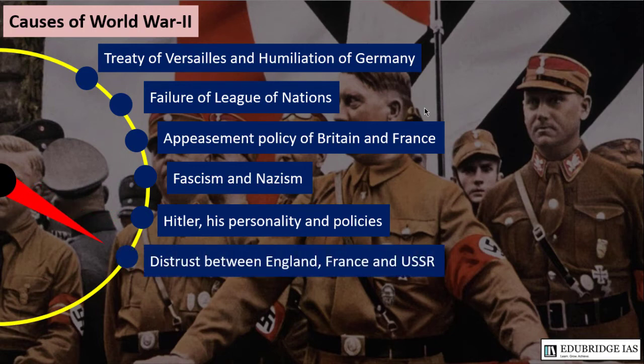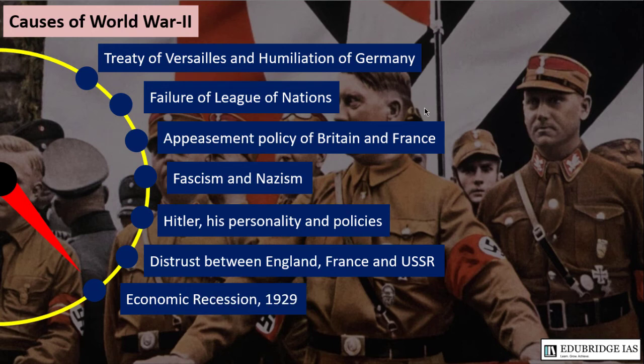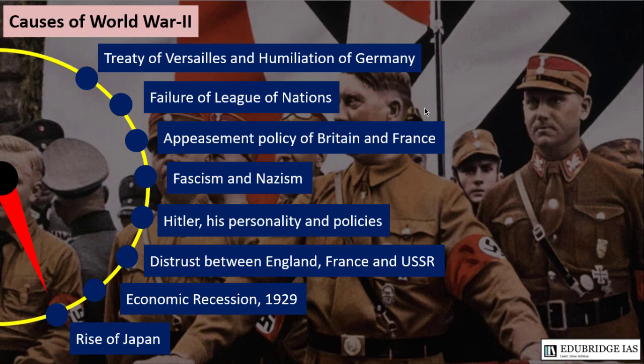The next reason is distrust between England, France, and the USSR. The USSR was a communist country and Germany was far-right, so they tried to appease Germany to balance out the USSR. The next reason is the economic recession of 1929, which Hitler used as an opportunity to rise to power in Germany. The next reason is the rise of Japan — Japan started imperialism, and the USA was drawn into World War II due to the Japanese attack on Pearl Harbor.